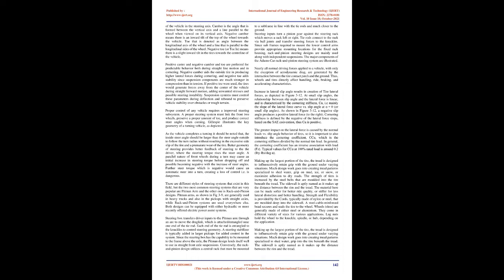Negative camber aids the outside tire in producing higher lateral forces during cornering, and negative toe adds stability since suspension components are much stronger in compression than in tension. If positive toe were used, the tires would generate forces away from the center of the vehicle during straight-forward motion, adding unwanted stresses and possible steering instability. Suspension systems must control these parameters during deflection and rebound to preserve vehicle stability over obstacles or rough terrain. A proper steering system must link the front two wheels, preserve a proper amount of toe, and produce correct steer angles when cornering.